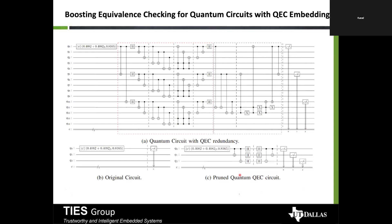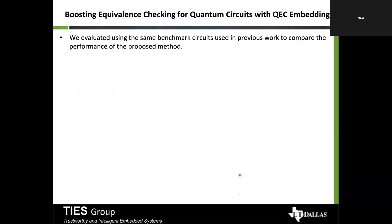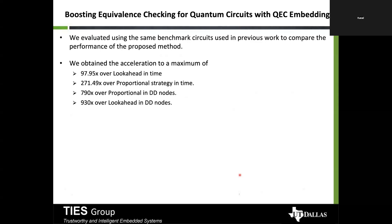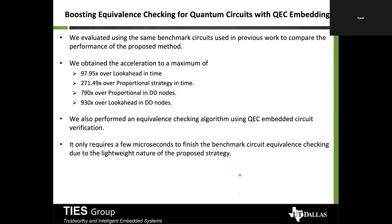For quantum equivalence checking with QEC embedding, we proposed a graph-based method that identifies which part is the QEC embedding and cuts it out so normal equivalence checking can be performed. Using the same benchmarks from the original decision diagram paper, we achieved a maximum of 98% acceleration over look-ahead in time, 271× improvement over proportional strategy in time, 790× improvement over proportional in the number of decision diagram nodes, and 930× over the look-ahead strategy. Our method performs verification in a few microseconds.